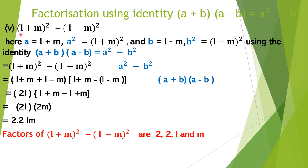Now we have (L+M)² − (L−M)². Both terms are perfect squares. We take A = (L+M), so A² = (L+M)², and B = (L−M), so B² = (L−M)². We use the identity (A+B)(A−B) = A² − B², and this expression is of the form A² − B².